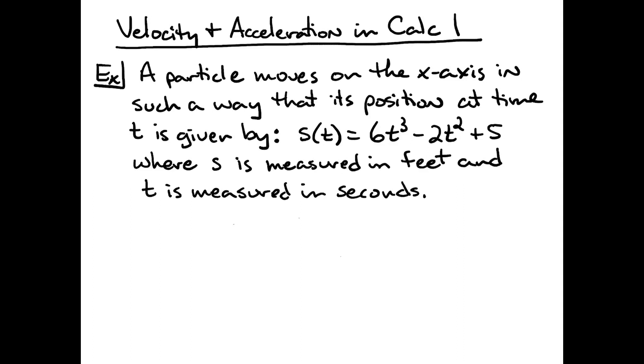So our example here is: a particle moves on the x-axis in such a way that its position at time t is given by the position function s of t equals 6t to the third minus 2t squared plus 5, where s is measured in feet and t is measured in seconds.